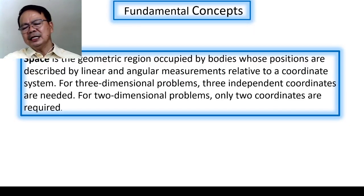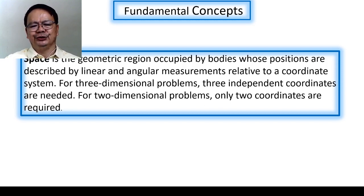With the concepts of mechanics, we shall also be dealing with the term space, which is defined as that geometric region occupied by bodies whose position are described by linear and angular measurements relative to a coordinate system. For three-dimensional problems, three independent coordinates are needed. For two-dimensional problems, only two coordinates are required.